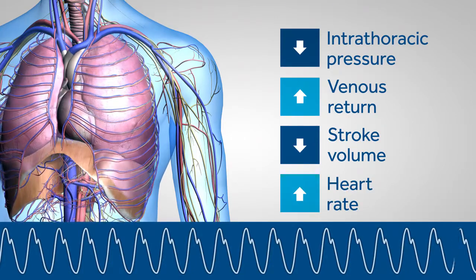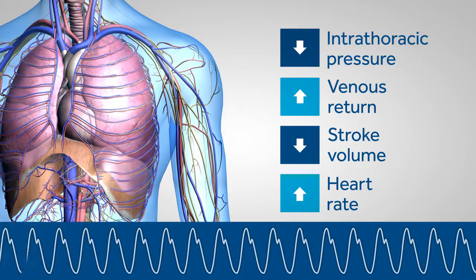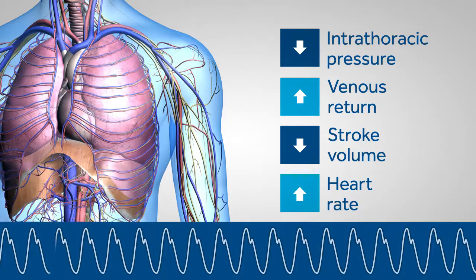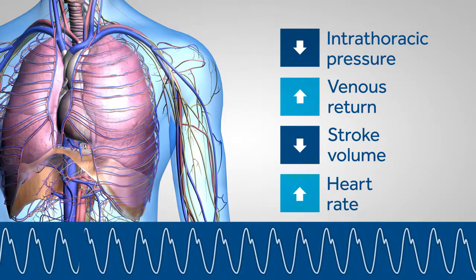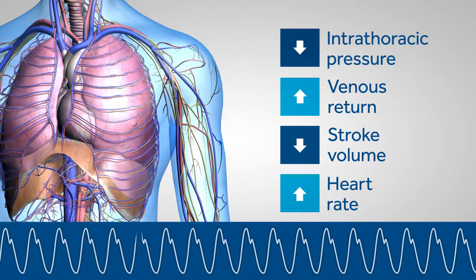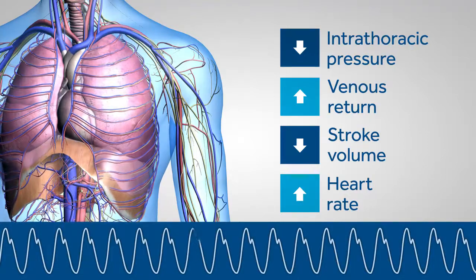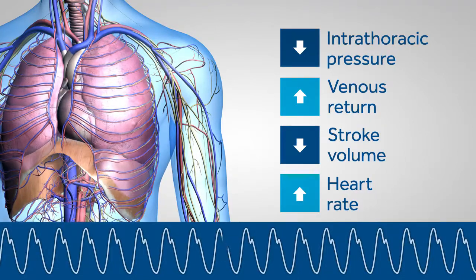These changes in the cardiovascular, respiratory and autonomic nervous systems result in changes in the pleth waveform modulations, which can now be used to calculate respiration rate.